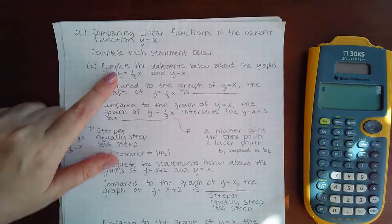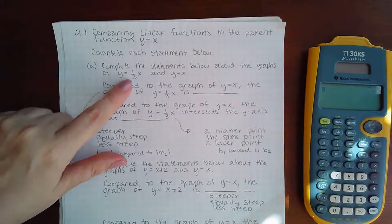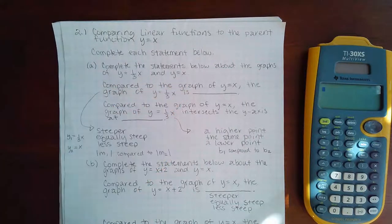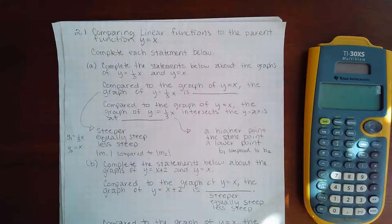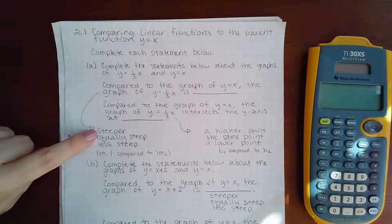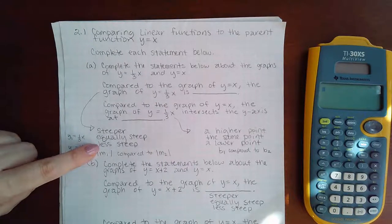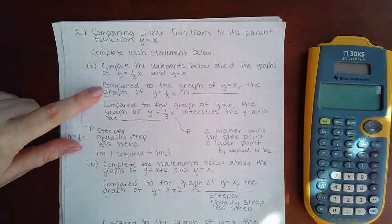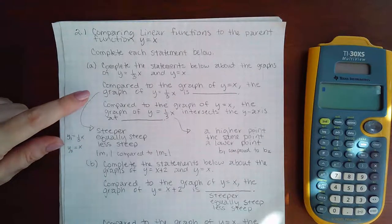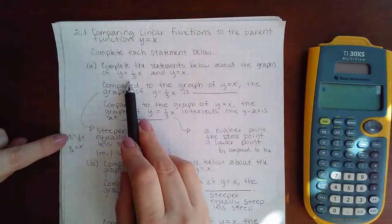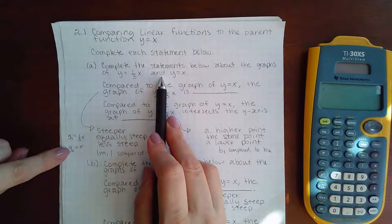Okay, so here it says complete the statements below about the graphs of y equals one-third x and y equals x. Compared to the graph of y equals x, the graph of y equals one-third x is steeper, equally steep, or less steep - those are my options for this first part. Now what you're going to do is consider the first equation that they gave you and then the second equation for this part.